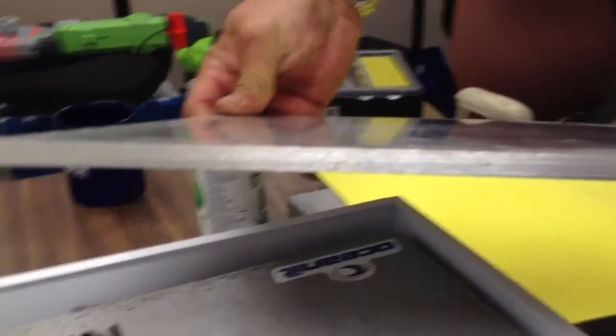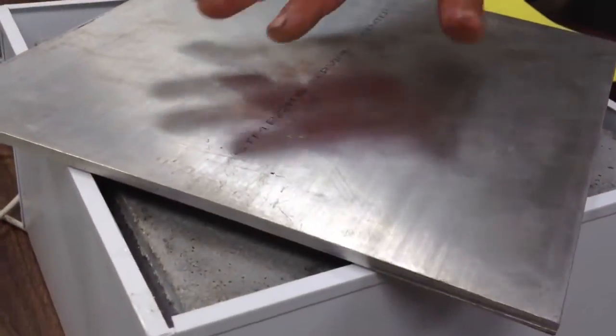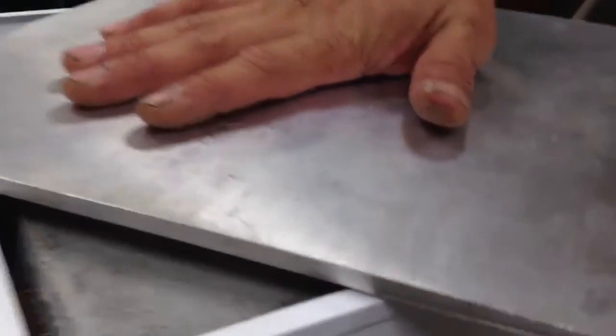So when we take a 12 by 12 by a quarter inch aluminum plate, we place it over. As you can see, I'll make it so you can see there's a gap. It seems to amplify the RF signal quite a bit. It's very sensitive.